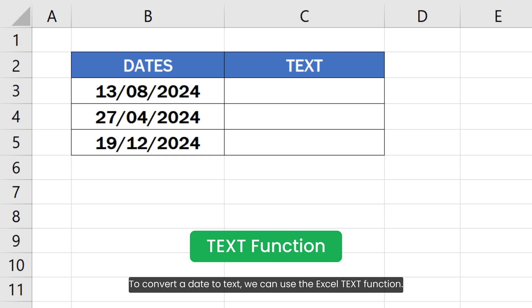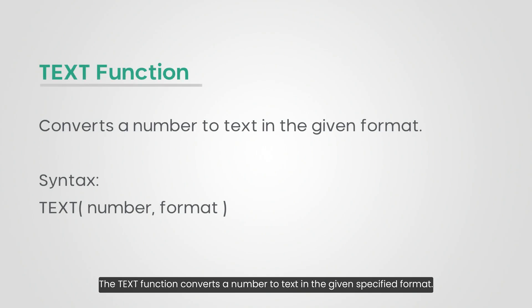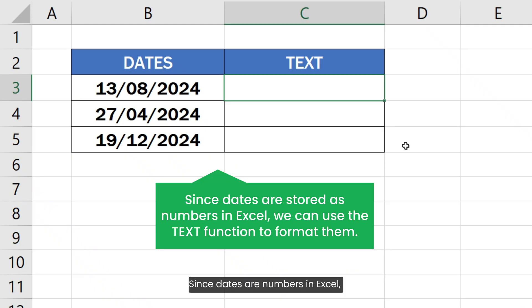To convert a date to text we can use the Excel TEXT function. The TEXT function converts a number to text in a given specified format. This function accepts two arguments: the number we want to convert to text, and the format we want to apply to the output text. Since dates are numbers in Excel, we can use this function to format dates as well.